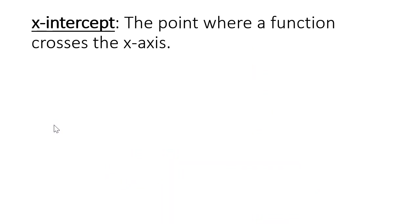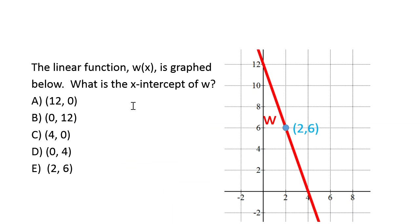So our x-intercept is the point where a function crosses the x-axis. That's going to be important. The linear function w of x, notice it's w parentheses x parentheses. That's function notation. Not critically important for this particular problem. Just know that you see w of x and you see a w, it means the same thing.